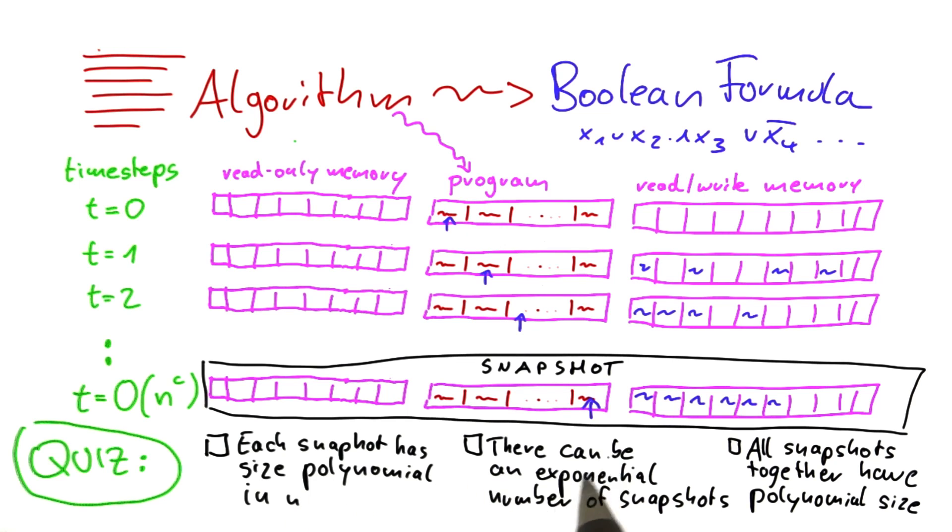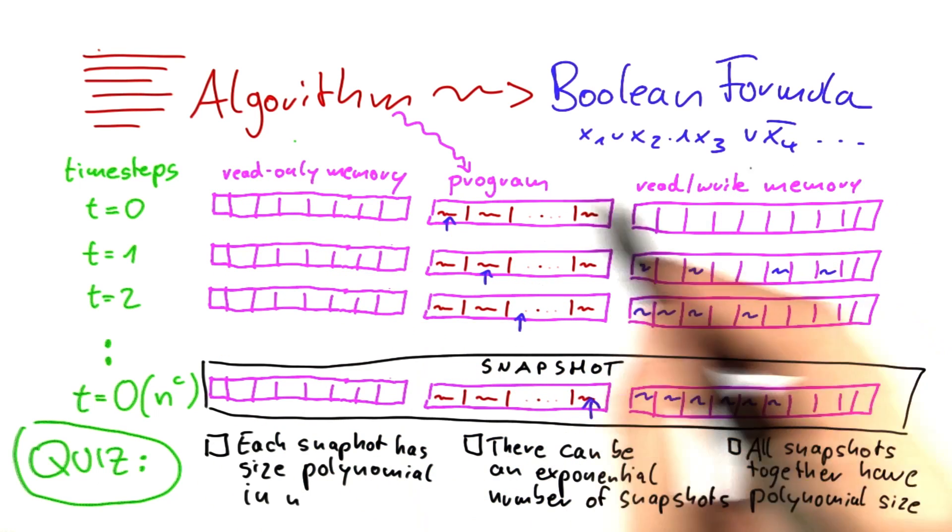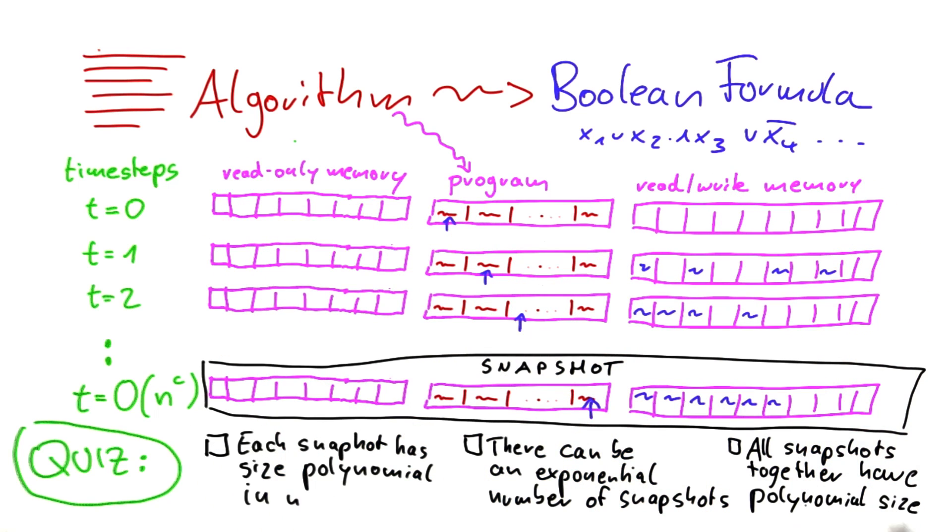Secondly, you could claim that there can be an exponential number of snapshots if we look at all of the time steps. And finally, one claim that I would like you to check out as well is all snapshots if taken together, so this whole part here, have polynomial size.